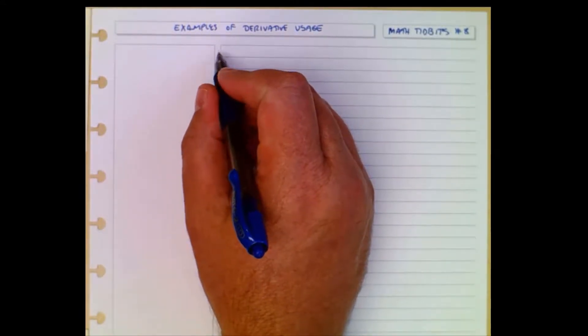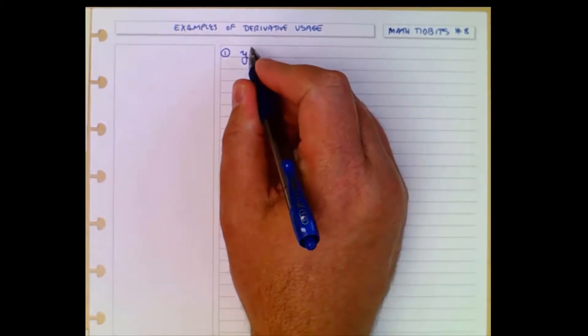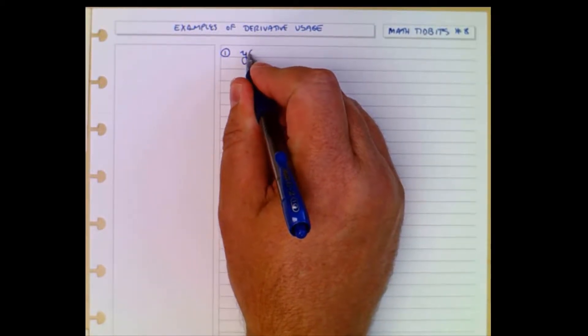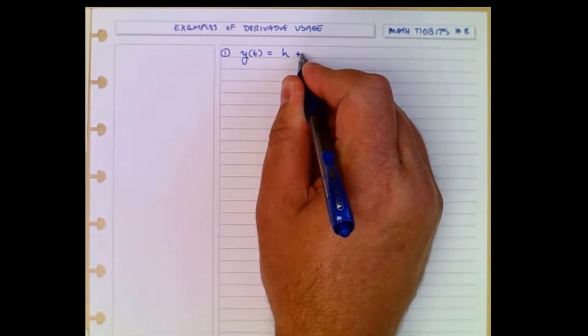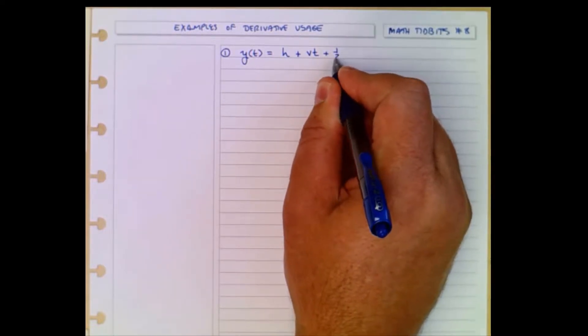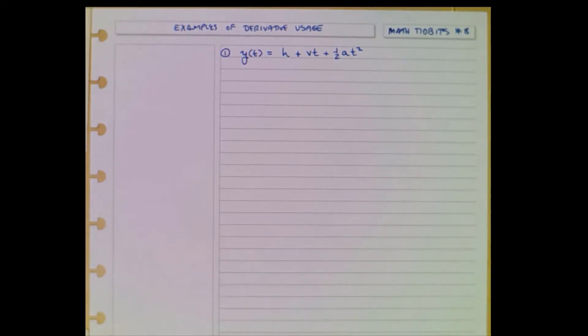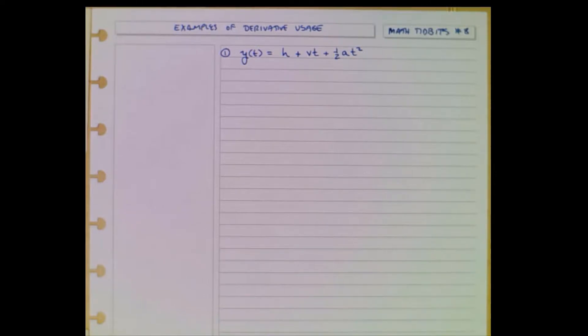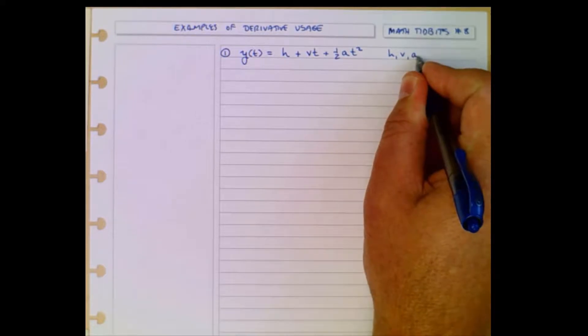And we'll make sure we hit all the basic rules. So suppose we have a value of a function y of t that is equal to h plus vt plus one-half at squared. Very much familiar for those who've had physics before, this kind of an expression. It's a constant acceleration equation where h, v, and a are constants.